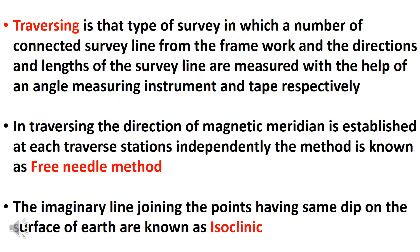Traversing is that type of survey in which a number of connected survey lines form the framework, and the direction and length of the survey lines are measured with the help of an angle-measuring instrument and tape respectively.